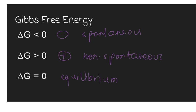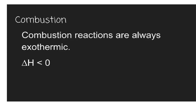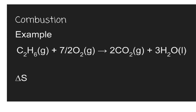We're going to assume that combustion and photosynthesis fall into the first two categories. If we look at combustion reactions, we know that they are always exothermic — they will always release heat energy. So the delta H, the enthalpy for all combustion reactions, is negative. Here we have an example of a combustion reaction: ethane reacting with oxygen to form carbon dioxide and water. We want to look at the entropy of the system.